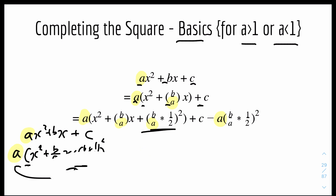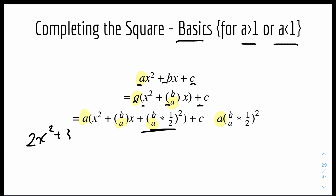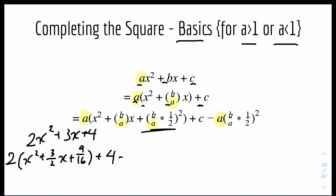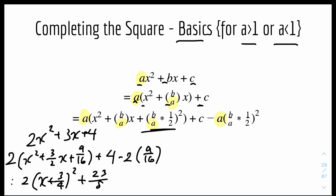Let's do an example. Say we have 2x² + 3x + 4. We factorise the 2 out of the first two terms: 2(x² + (3/2)x) + 4. The new c term would be (3/2 ÷ 2)² = (3/4)² = 9/16. We plus 9/16 inside and minus 2 × (9/16) on the outside. This simplifies to 2(x + 3/4)² + 23/8. That's the final answer.